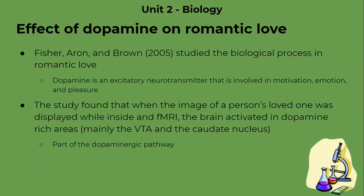Now let's look into the effect of dopamine on romantic love. Fisher, Aaron, and Brown in 2005 studied the biological process of romantic love. Dopamine is an excitatory neurotransmitter involved in motivation, emotion, and pleasure — basically the neurotransmitter released when you bite into a chocolate bar. It is often involved in addiction because people over-rely on drugs for the euphoria and pleasure, activating the dopaminergic pathway involved in pleasure, motivation, and emotion.